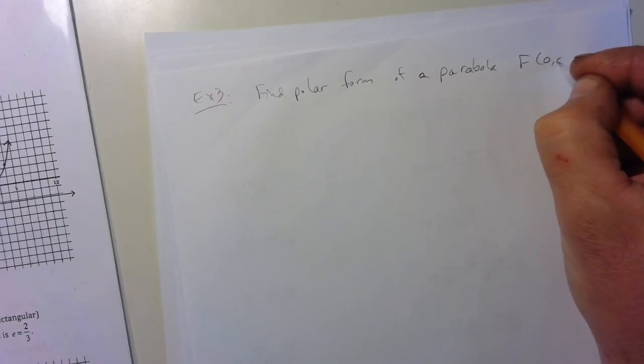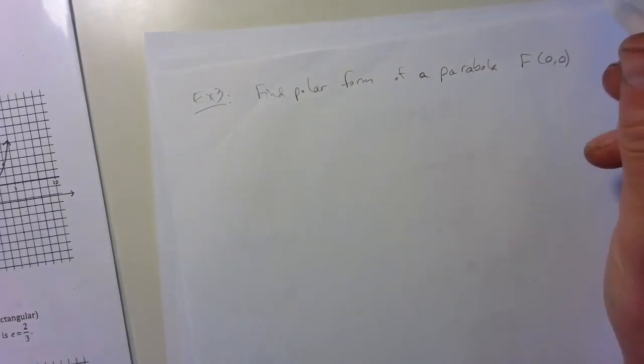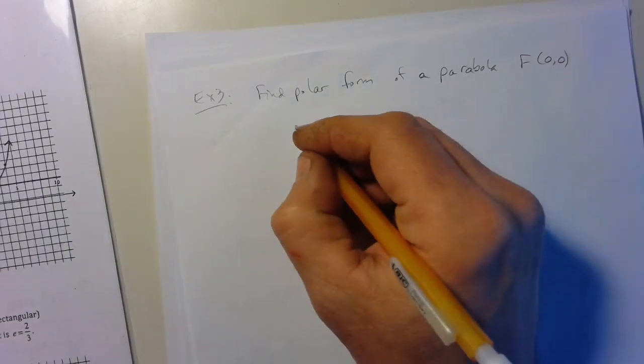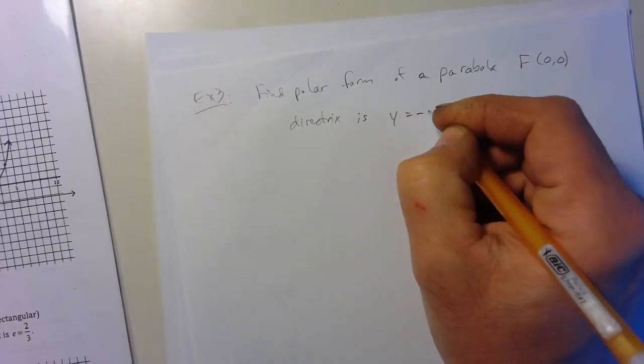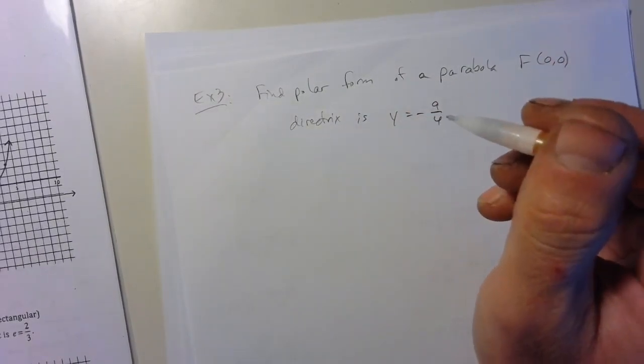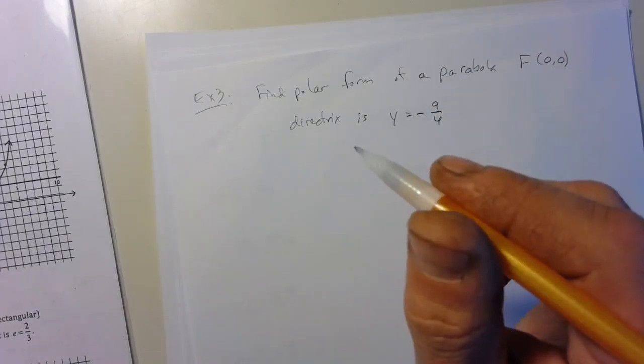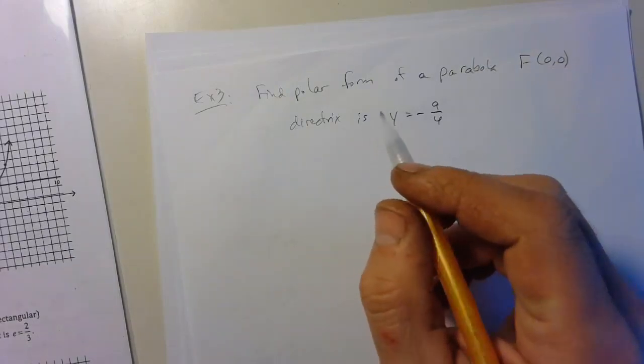The focus is at zero, zero. Again, we talked about that. We're going to always be able to have the focus at zero, zero. And the directrix y equals negative nine-fourths. So let's find the polar form of this parabola for ourselves.